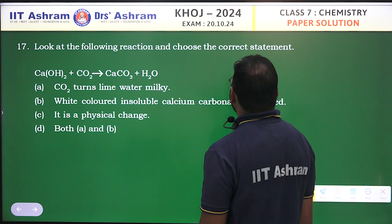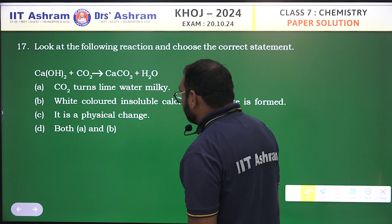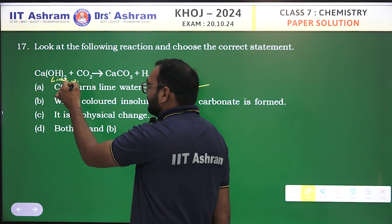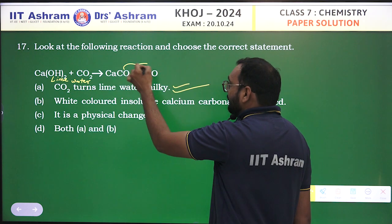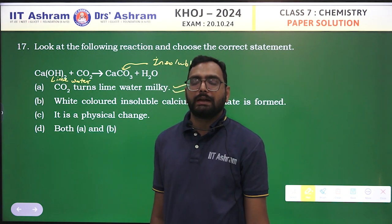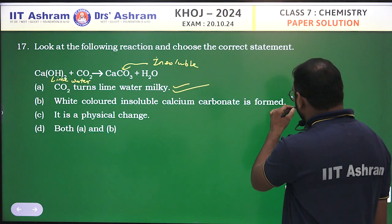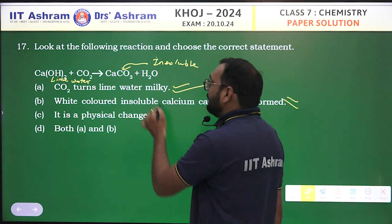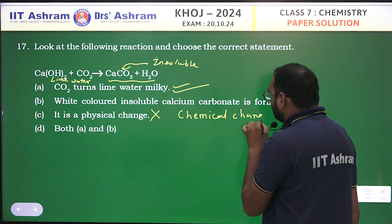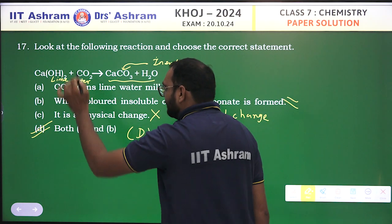Let's see question number 17. Look at the reaction: Ca(OH)₂ + CO₂ → CaCO₃ + H₂O. CO₂ turns lime water milky — yes, because when CO₂ reacts with Ca(OH)₂, insoluble CaCO₃ is formed, making the water appear white like milk. This is a chemical change, as new substances are formed. Both statements A and B are correct, so option D is the correct answer.